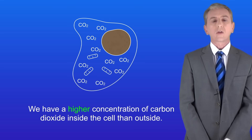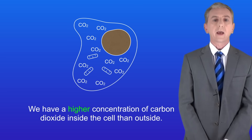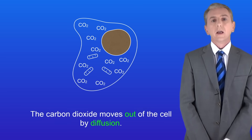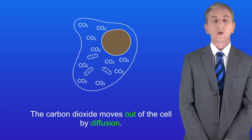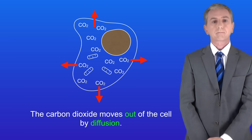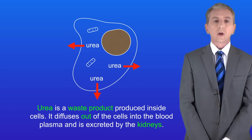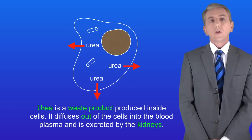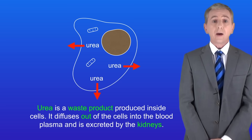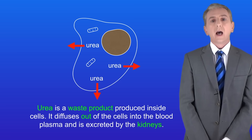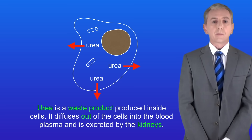That means we have a higher concentration of carbon dioxide inside the cell than outside, so the carbon dioxide moves out of the cell by diffusion. Another molecule which diffuses out of cells is urea. Urea is a waste product produced inside cells. It diffuses out of the cells into the blood plasma and is excreted by the kidneys.